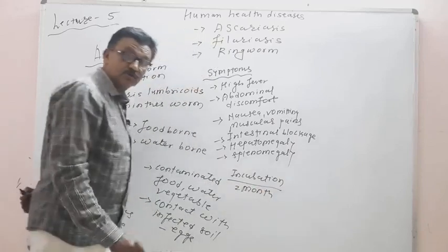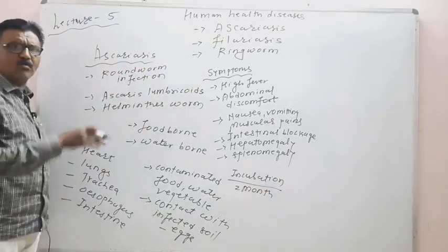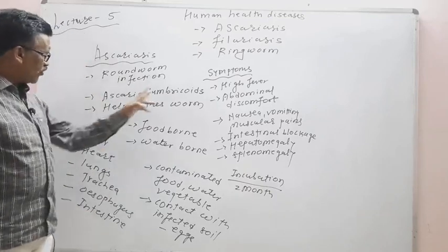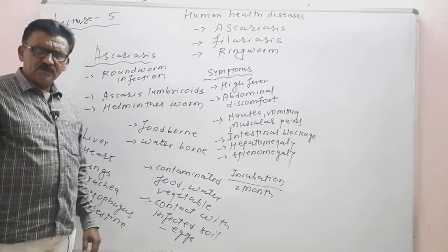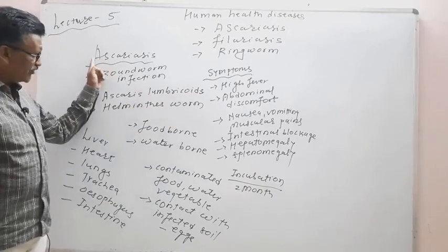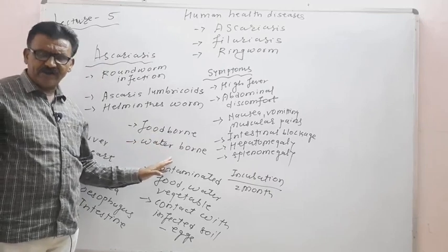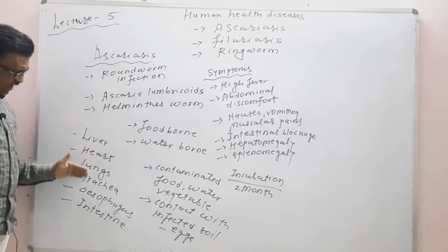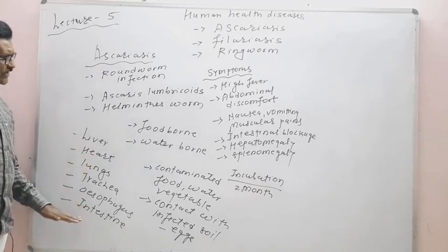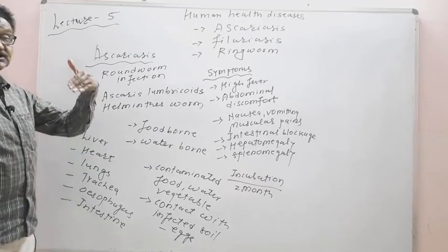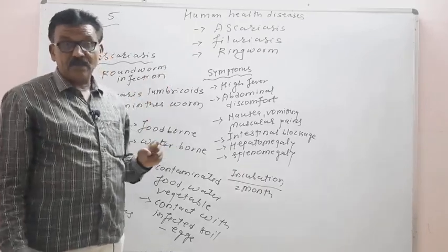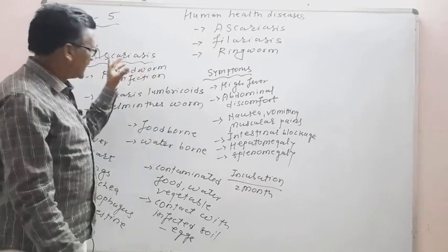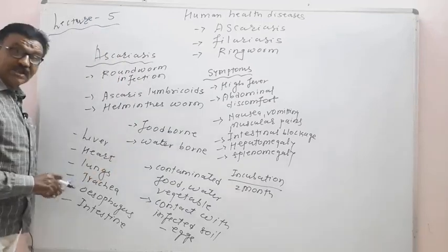In summary, Ascariasis is a roundworm infection caused by Ascaris lumbricoides. It is a foodborne and waterborne infection with infection sites in the liver, heart, lungs, trachea, esophagus, and intestine. There are five larval stages of Ascariasis.